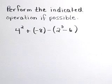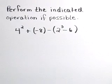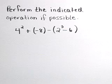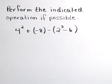Perform the indicated operation, if possible: 4 squared plus negative 8 minus the quantity 2 cubed minus 6.